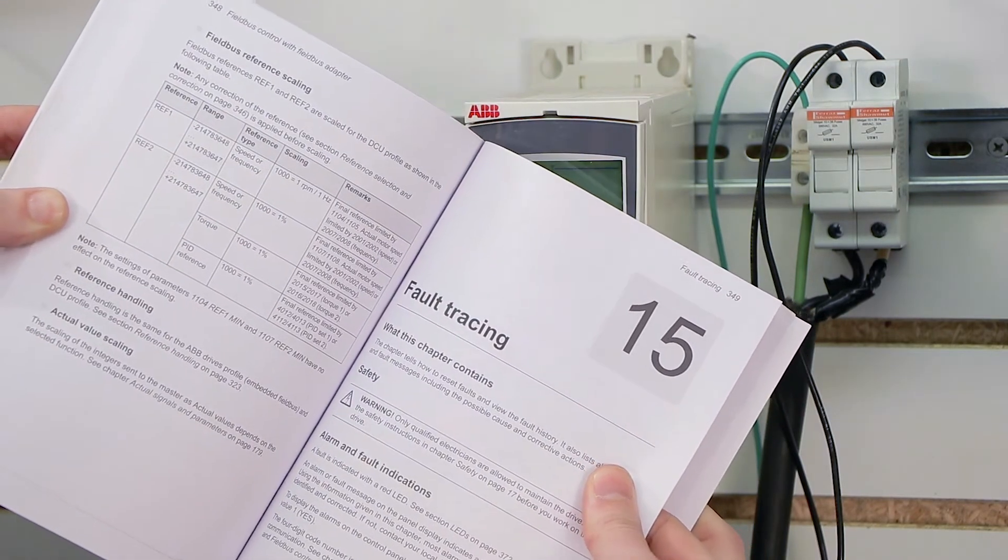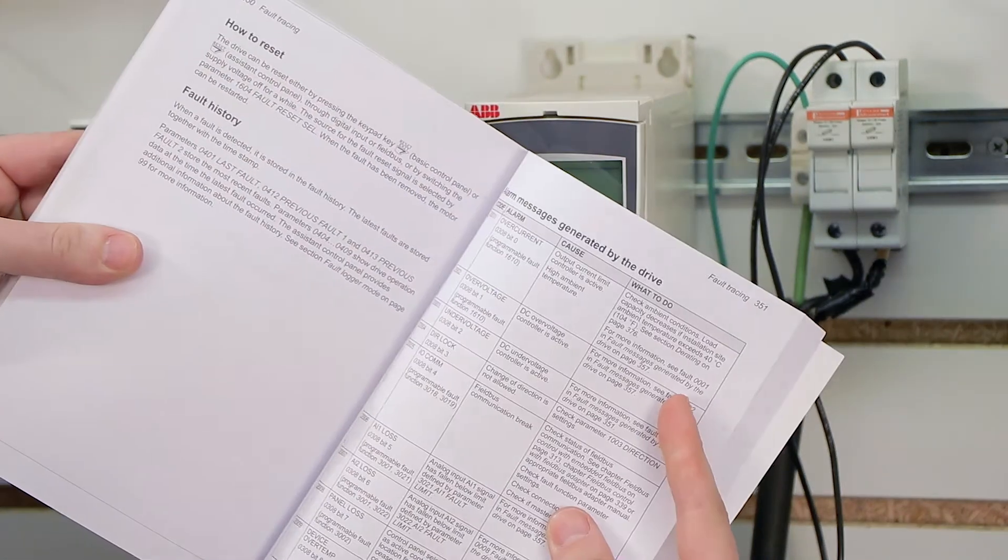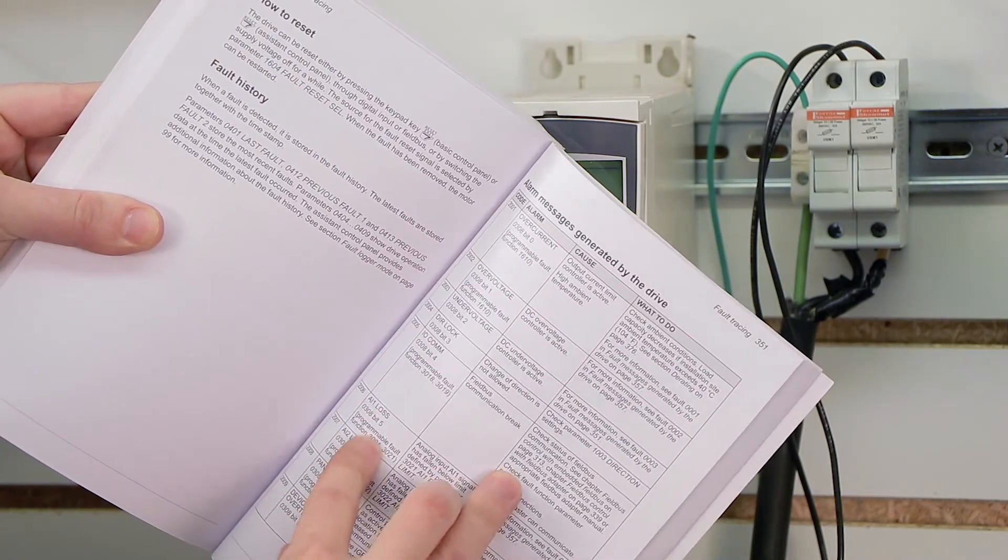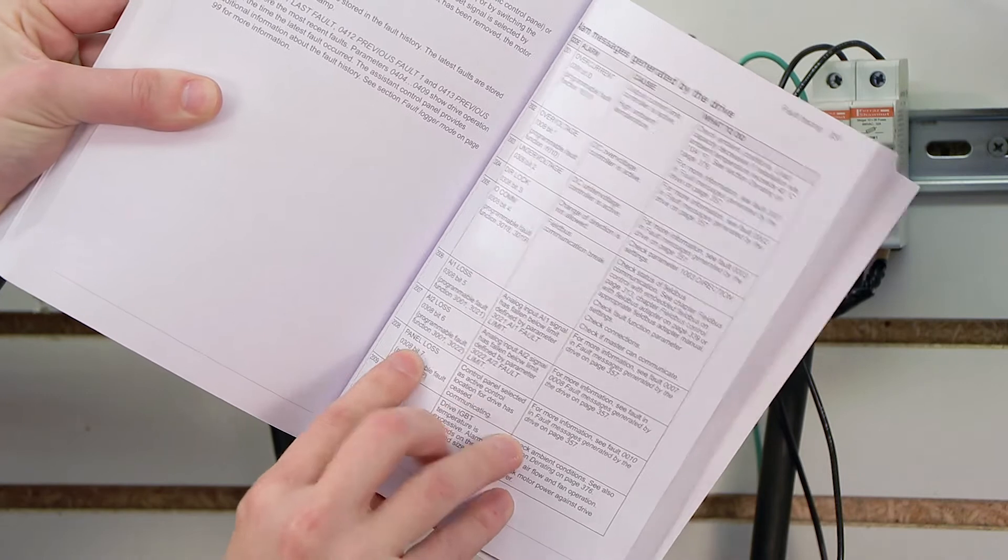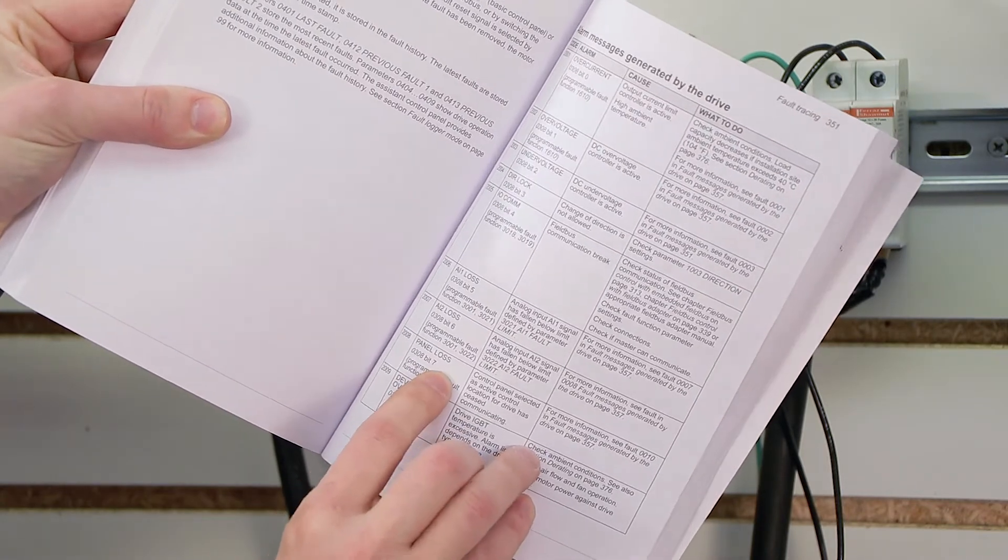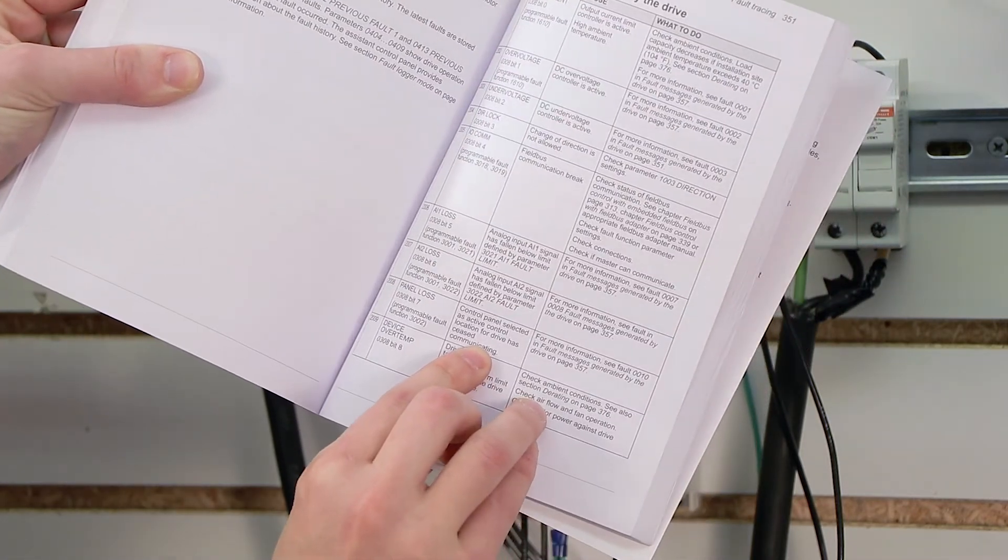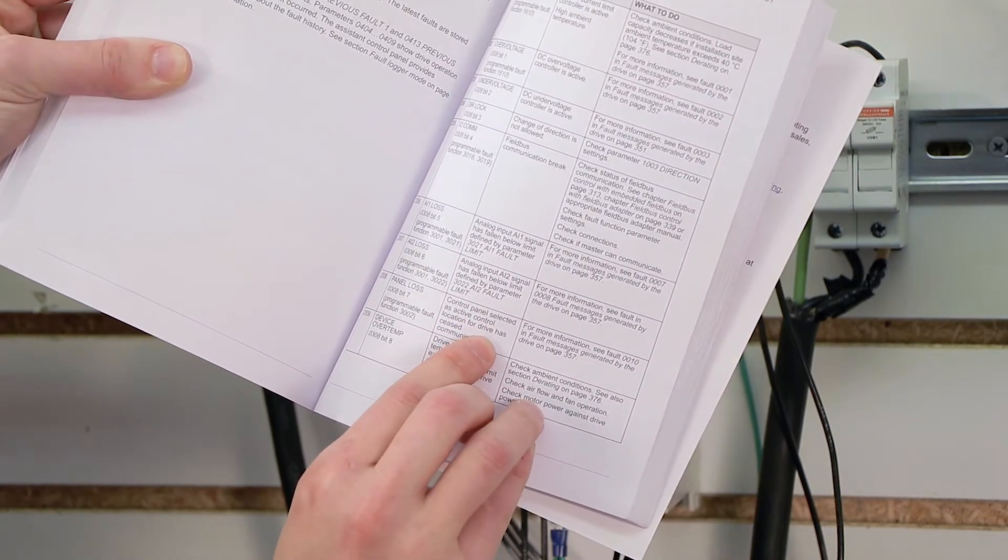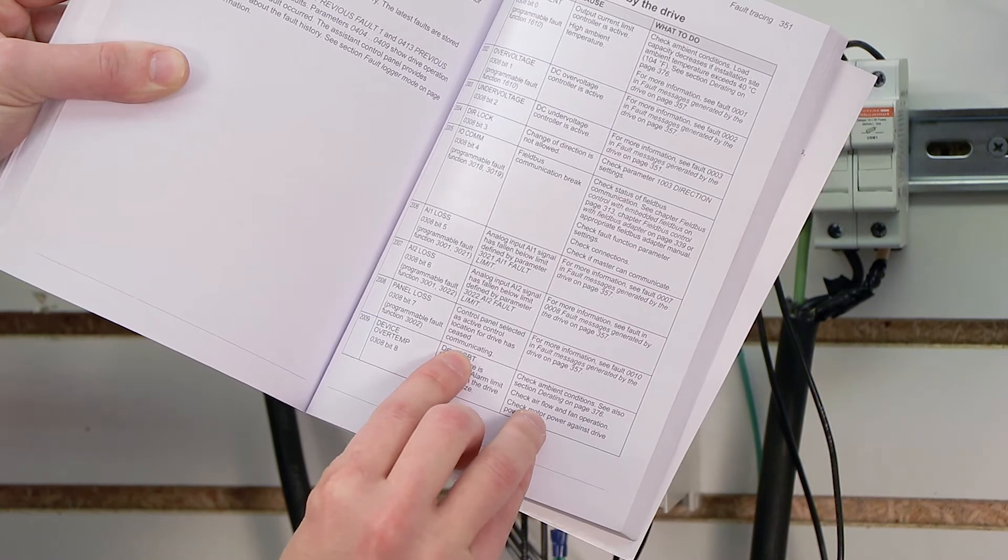On my manual, it's page 349, and if I go to the next page, I can actually go through and try to locate these fault codes. If I go down through, I can find the panel loss fault, and it'll actually give me a cause, and the cause of this particular fault is control panel selected as active control location for drive has ceased communicating.